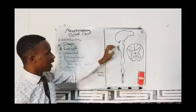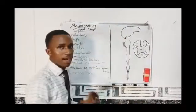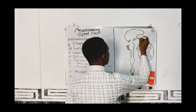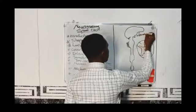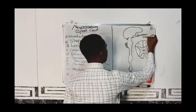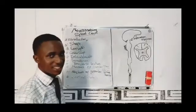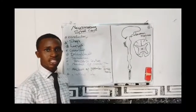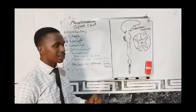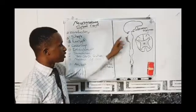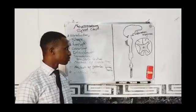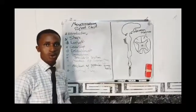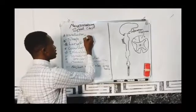The spinal cord is a part of the central nervous system that is continuous with the brain at the foramen known as the foramen magnum. The foramen magnum is the largest foramen in the cranium, and through that foramen the brain continues as the spinal cord. The spinal cord is cylindrical in shape.